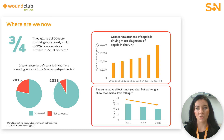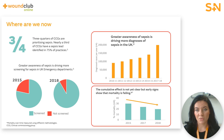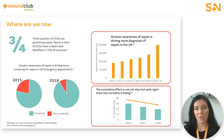Greater awareness of sepsis is driving more diagnoses in the UK. Back in 2010, around 90,000 cases of sepsis were being officially diagnosed. By 2017–18, this had more than doubled to almost 200,000 diagnoses per year. Early analysis carried out by the UK Sepsis Trust has suggested that the mortality rate of people diagnosed with sepsis has been falling over recent years.